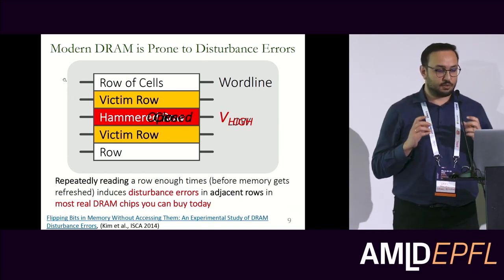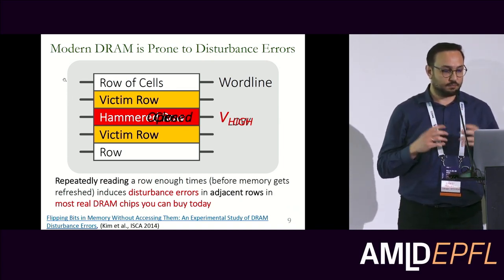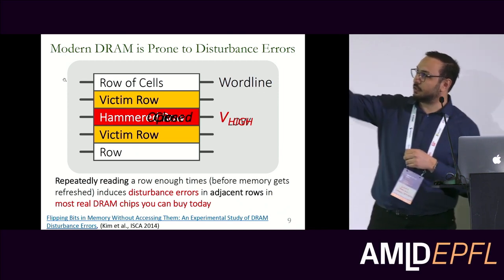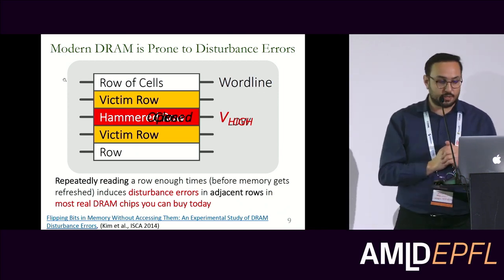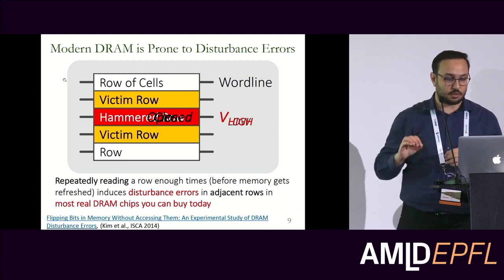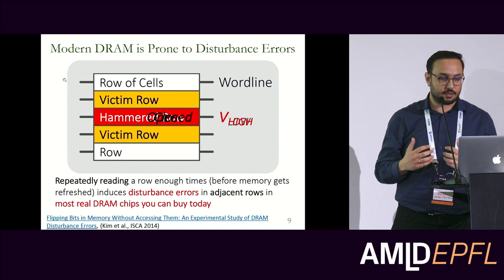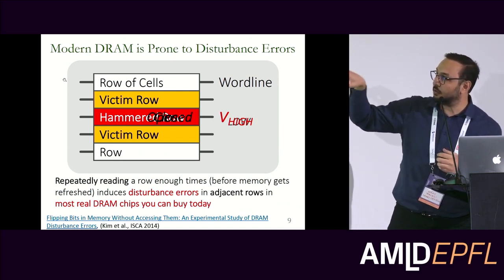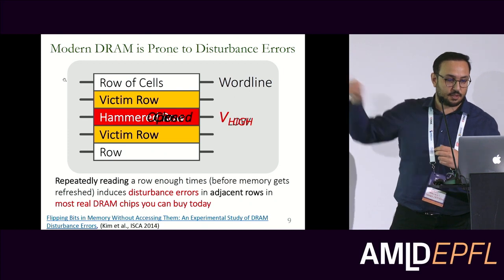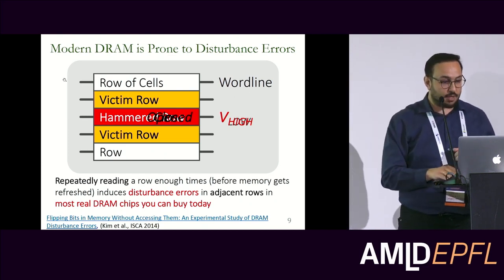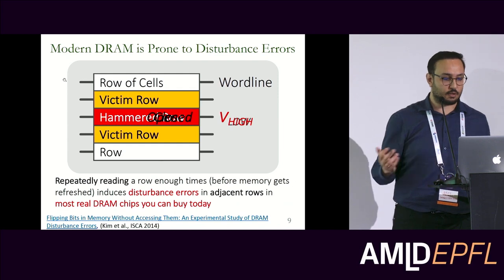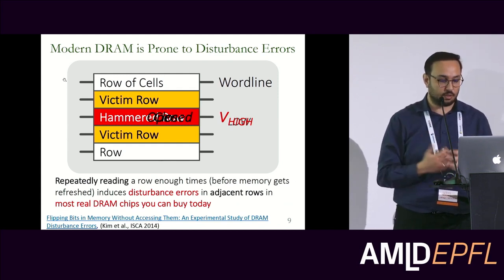In DRAM, you store your data in an array and access this array in row granularity. To access a row, you drive your word line with a high voltage and then a low voltage to close it. When you do this many times, you start seeing bit flips. When you access a row multiple times in a very short time period, you start seeing bit flips physically at nearby rows — those victim rows. These rows are not always allocated by the same process, and they can contain operating system data, so you can essentially hack the whole system.